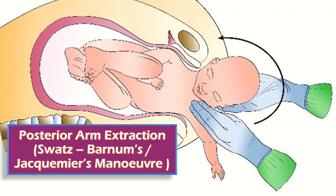Next comes posterior arm extraction, also called the Swartz-Burnham-Jacquemier maneuver. If the reverse Wood screw maneuver also fails, I will try to deliver the posterior arm first. I insert my hand into the vagina posteriorly, identify the axilla, reach the cubital fossa or elbow, apply pressure to flex the elbow in front of the body, grasp the wrist, and sweep the posterior arm across the chest to deliver it, then deliver the shoulders.